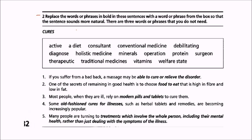Second exercise: we need to replace the words or phrases in bold with a word or phrase from the box so that the sentence sounds more natural. There are three words or phrases that you may not need. First: if you suffer from a bad back, massage may be able to cure or relieve the disorder. This comes from the word 'therapy', so we will use 'therapeutic'. A person who provides a therapeutic service is called a therapist.